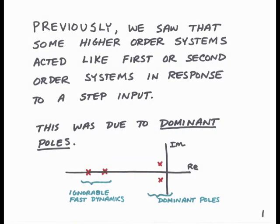In this lecture, we'll look at another case where a high-order system can be approximated as a low-order system, a first- or a second-order system. In the last lecture, we saw some cases where this happened, mainly the fact that some poles were very fast and other poles were slow. The slow poles were referred to as the dominant poles because the step response was primarily determined by them. The fast poles did not contribute so highly to the response of the system.